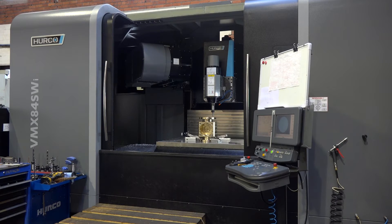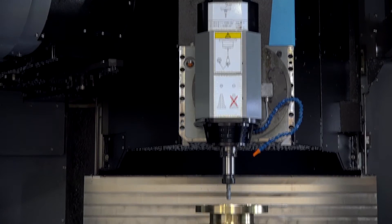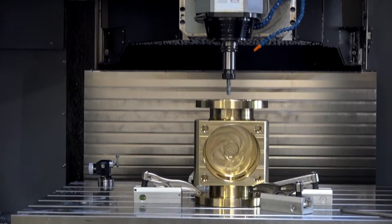What's the spec of the machine, Ian? Oh, well, it's the 40-tool tool changer. We've got through-coolant spindle. And what's the speed of the spindle? It goes up to 12,000 RPM.